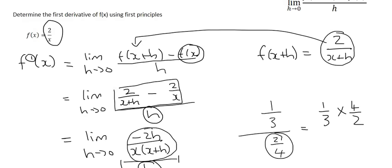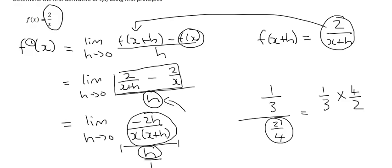With limits, always try to plug in h=0 at the beginning, but it never works with the first principle formula because you get 0 in the denominator. So we saw we had two fractions at the top, got a common denominator, and combined them.